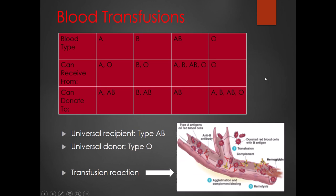In terms of blood transfusions, type A can receive from A and O; type B can receive from B and O; type AB can receive from A, B, AB, and O; type O can only receive from other type O people. For donating: A can give to A and AB; B can give to B and AB; AB can only give to AB; and O can give to A, B, AB, and O. So type O is the universal donor, and type AB is the universal recipient.